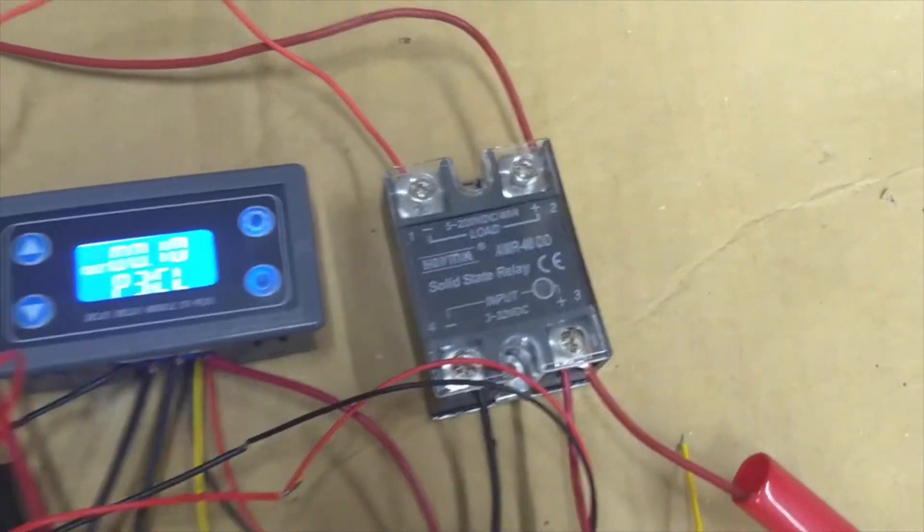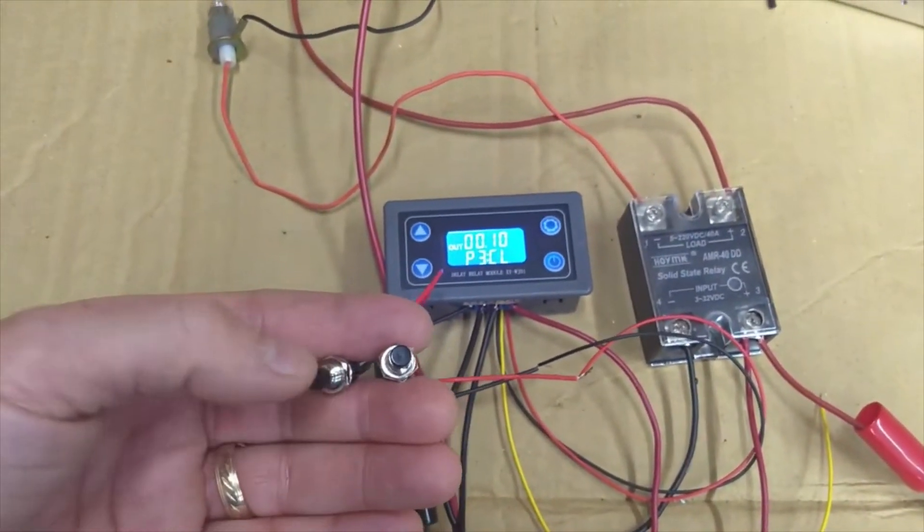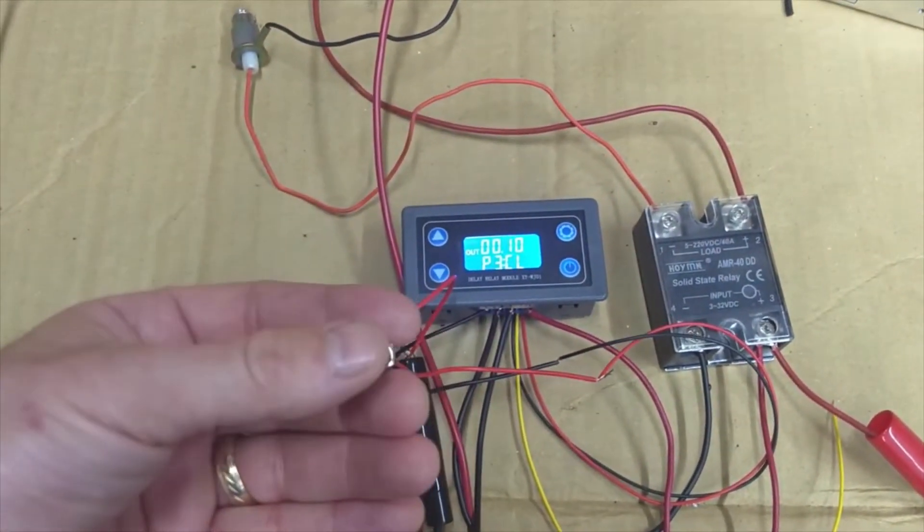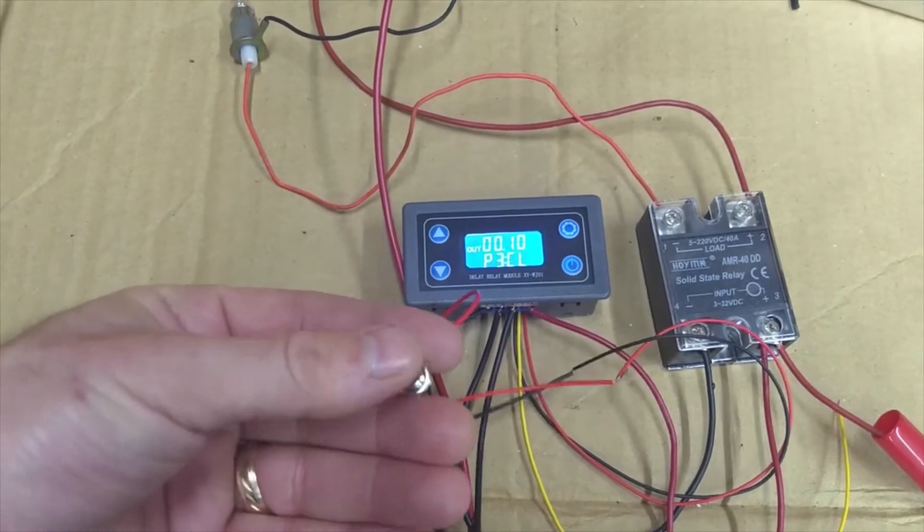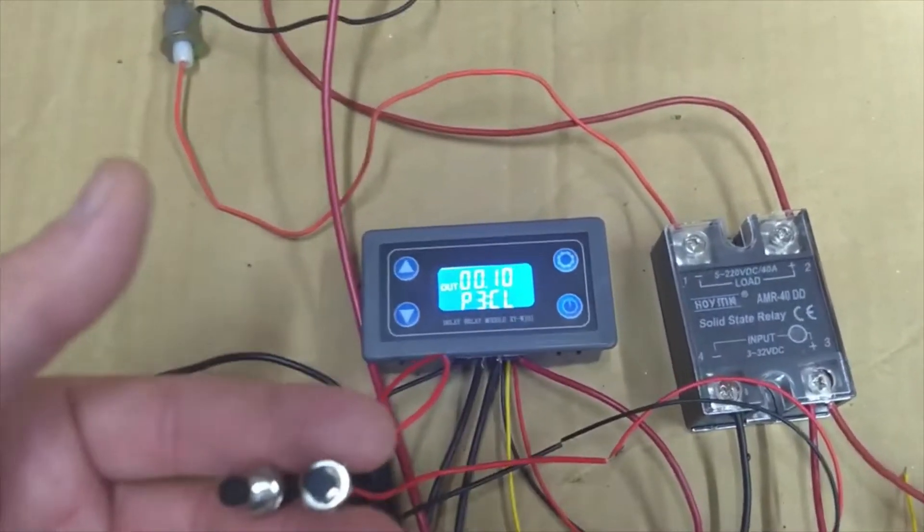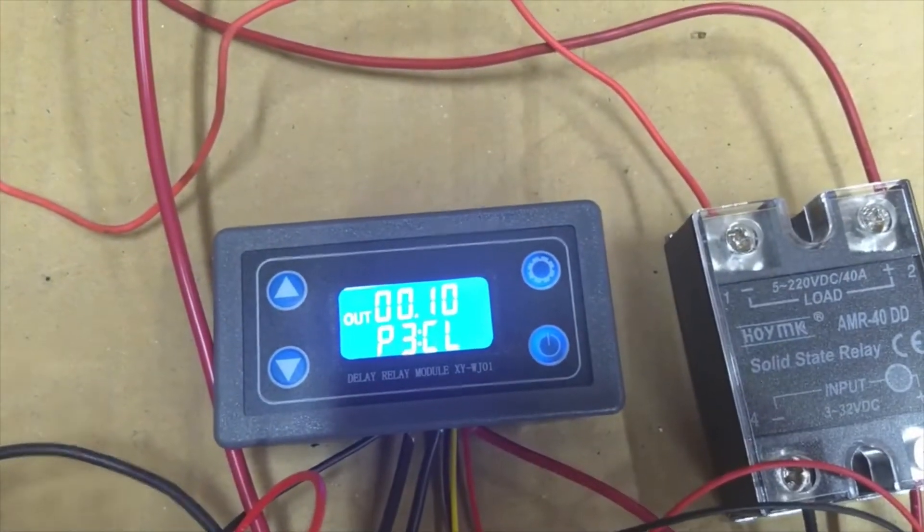I have a timer in the middle, solid-state relay on the right, and then two buttons. We have the trans brake button on the left and then the bump button on the right. I currently have the timer set to a tenth of a second. That's adjustable.